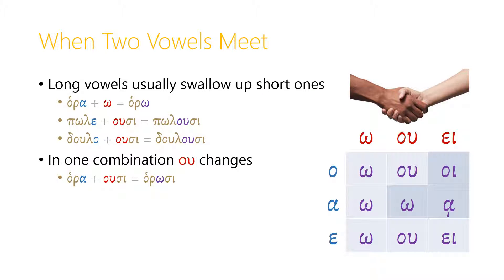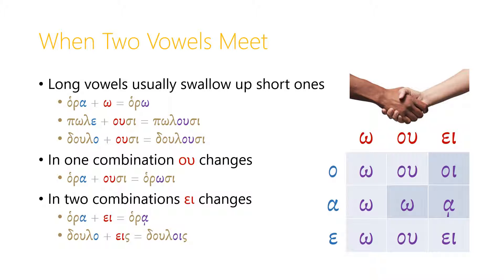But in one combination, the omicron-upsilon will change: when you have an alpha along with the omicron-upsilon, they combine to make an omega. So horaa plus usi will equal horosi instead of horusi. And in two combinations, the epsilon-iota diphthong will be changed. If an alpha meets the epsilon-iota, the iota becomes a subscript underneath the alpha. So horaa plus the ei ending of the third person singular becomes hora with an iota subscript — and remember to type that iota subscript. Doula plus ace changes slightly differently: the omicron, when it meets the ei diphthong, becomes oi. So instead of doulais, we have doulois.